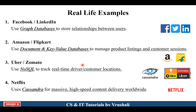Now let's understand some real-life examples where NoSQL database is actually used. Facebook and LinkedIn use graph databases to store relationships between different users. Amazon and Flipkart use document and key-value databases to manage product listings, customer reviews, and customer sessions. Uber and Zomato use NoSQL database for tracking real-time drivers and customer locations. Netflix uses Cassandra database to handle massive traffic and deliver high-speed content to users. These are the real-life applications where NoSQL database is exactly used.